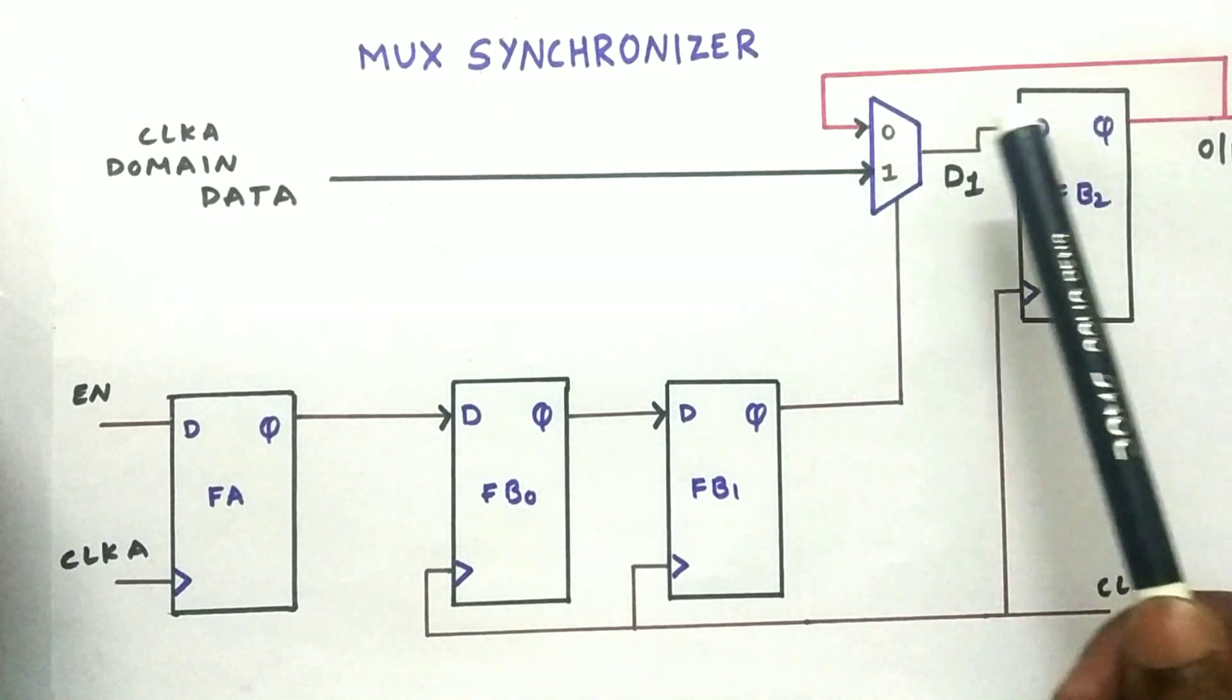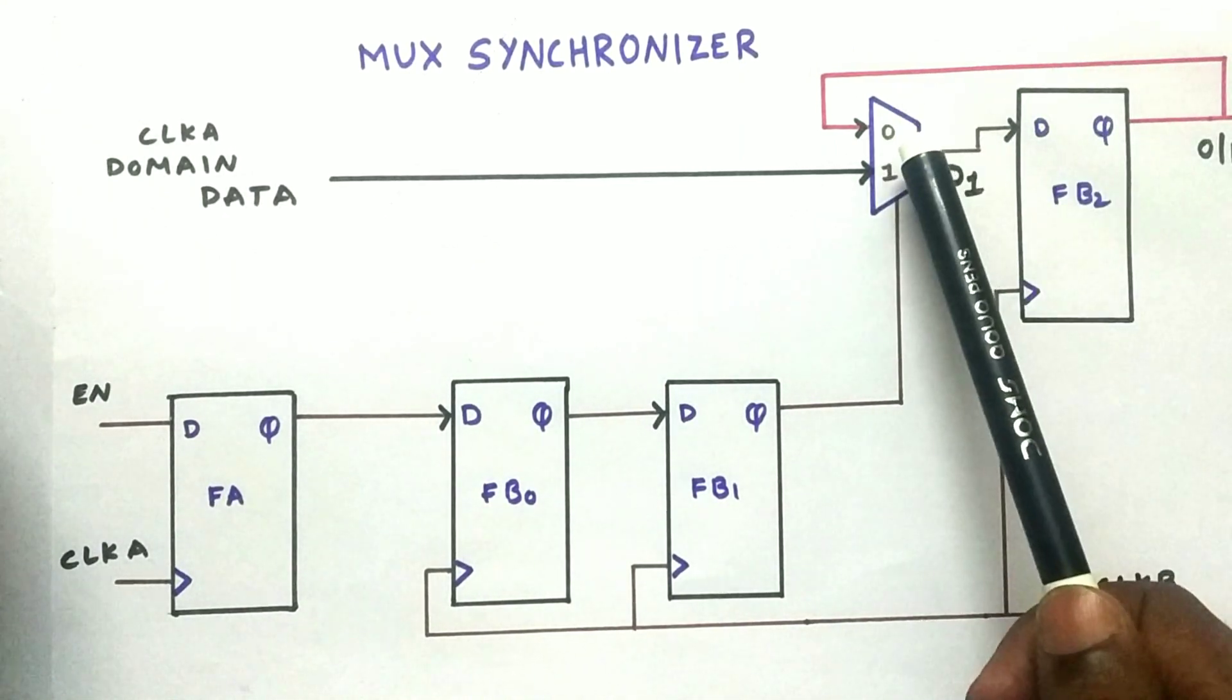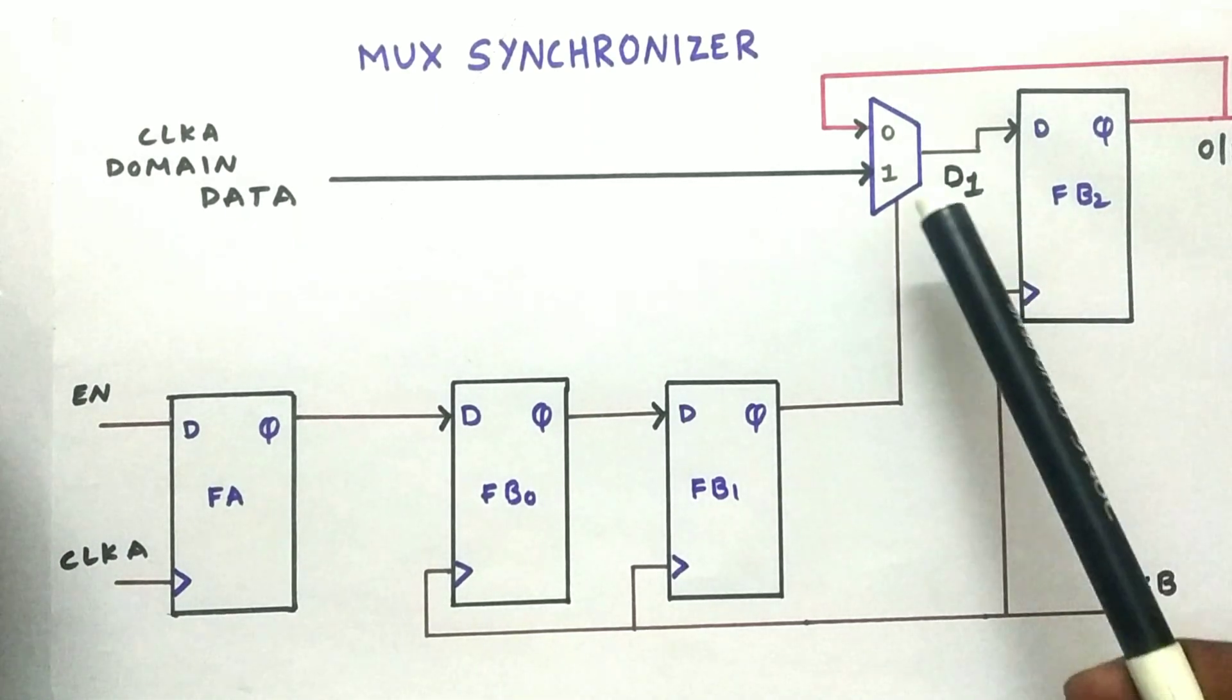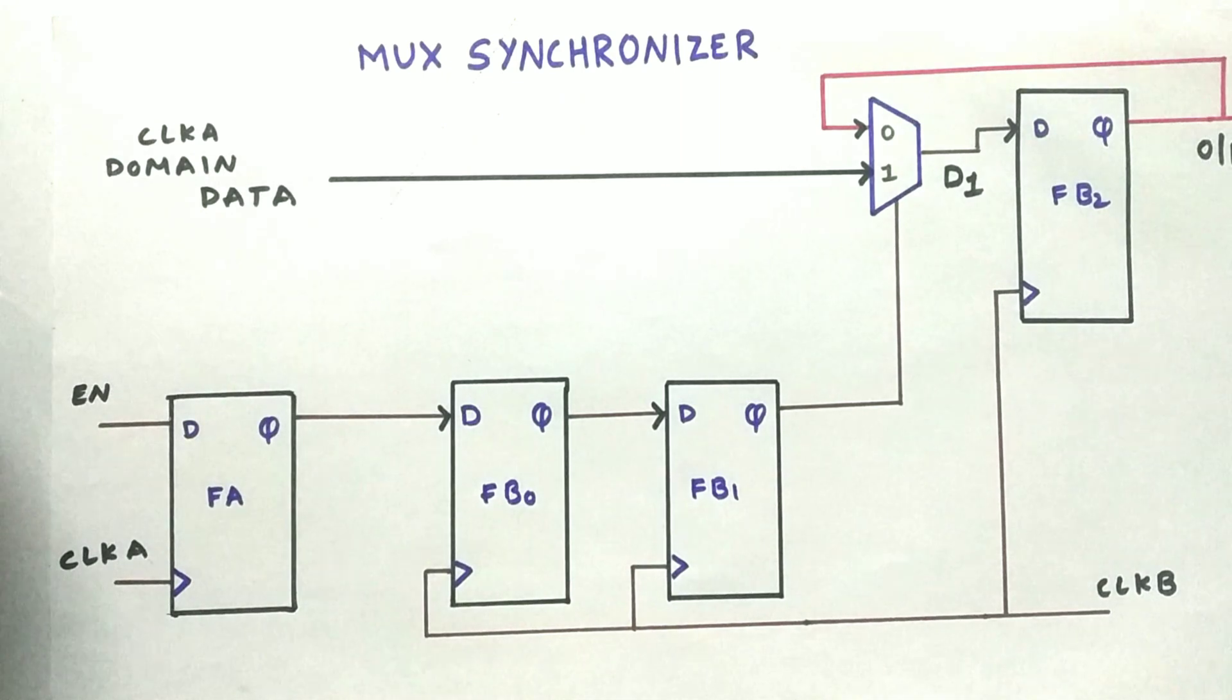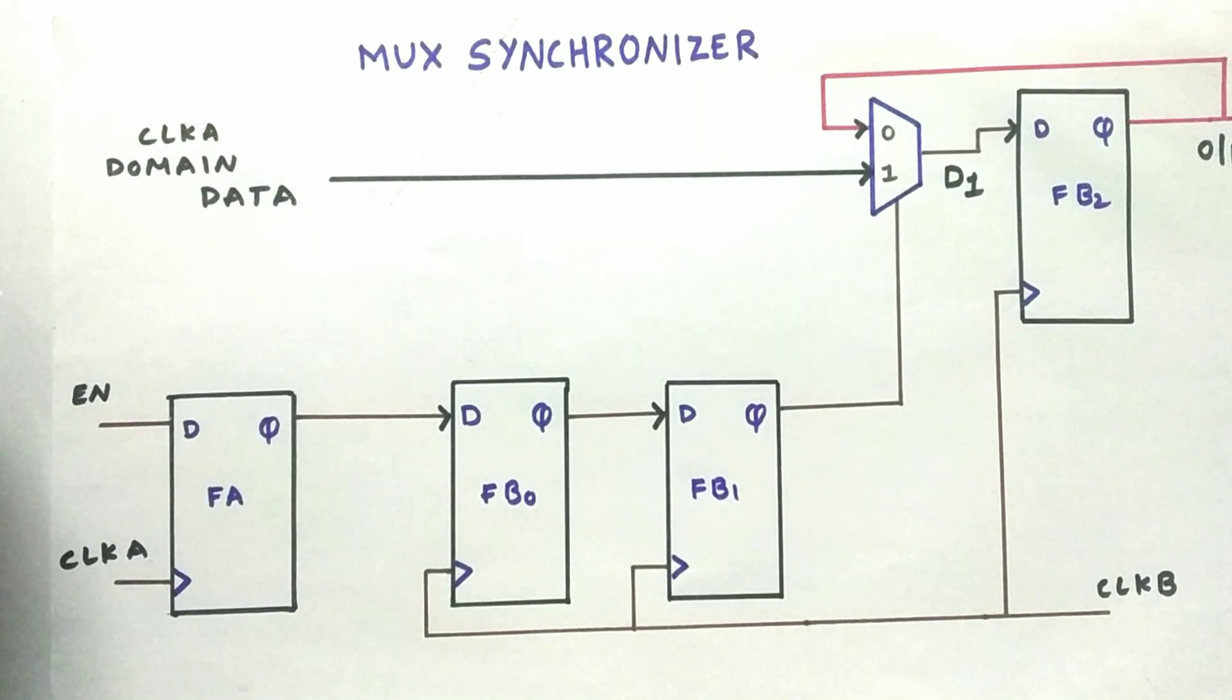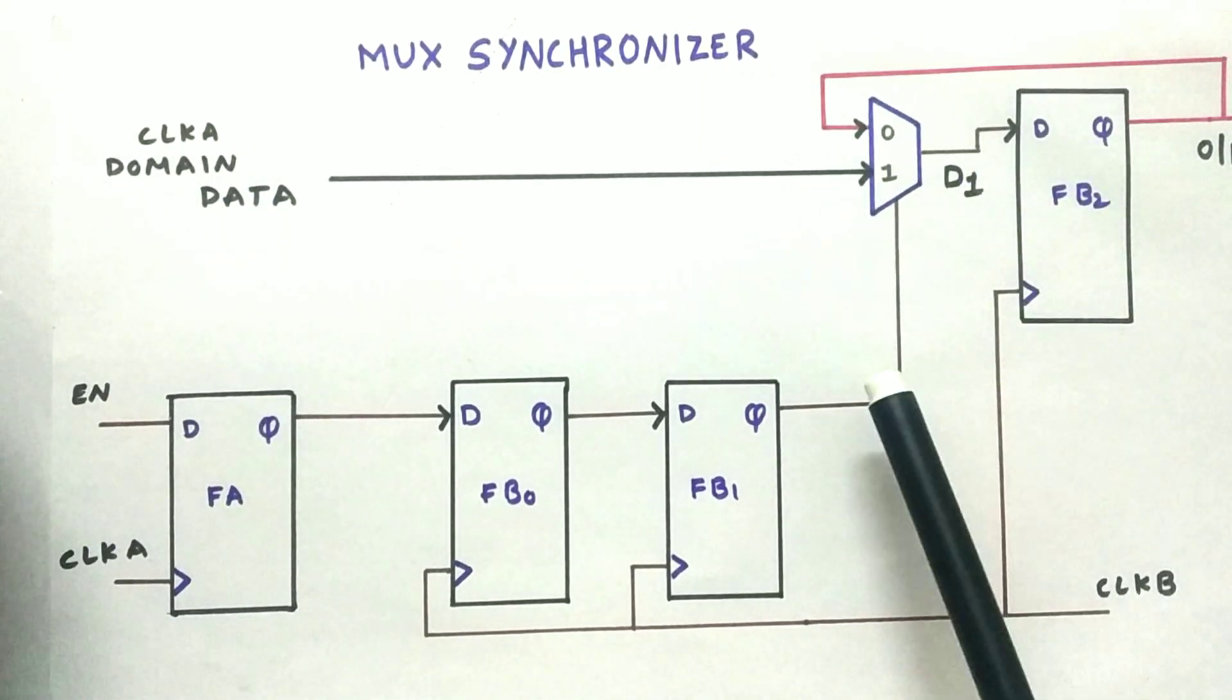The MUX have two inputs. One input is fed back from the output. The output we will discuss later. And one input is the data which we are going to convert from one clock domain to another clock domain. This data is coming from a clock A source domain.